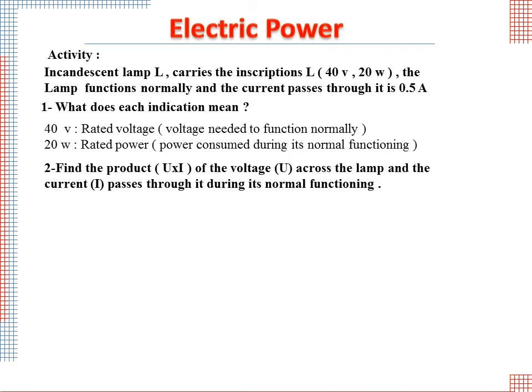Find the product U times I of the voltage U across the lamp and the current I that passes through it during its normal functioning. U times I equals 40 times 0.5 equals 20W. Compare the power P and U times I.